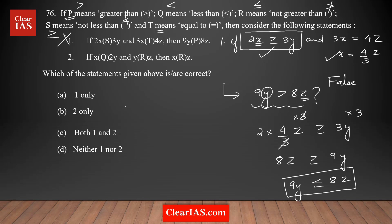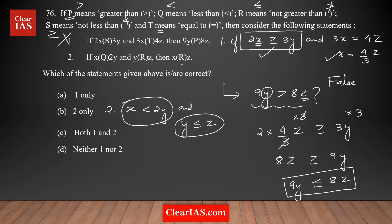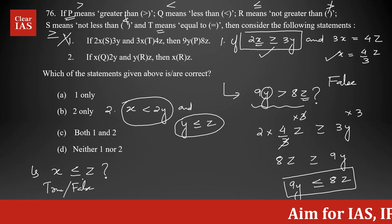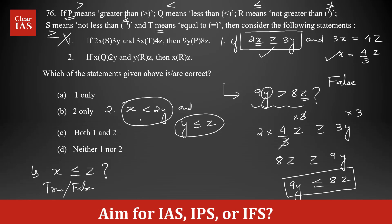Now let's analyze Statement 2. Statement 2 says: if x < 2y (q means less than) and y ≤ z (r means less than or equal to), then we need to check whether x ≤ 2z. These two are the facts given, and we need to determine whether the conclusion is true or false.